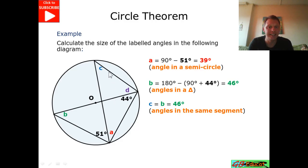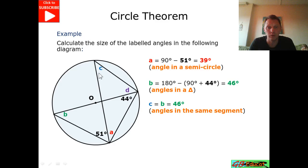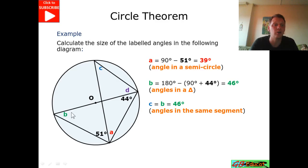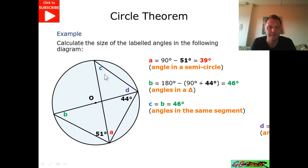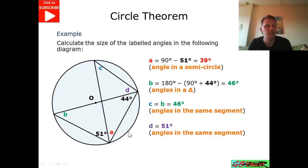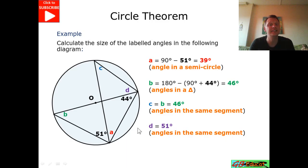For angle C, I've chosen this as 46 degrees also, because here I've got my bowtie shape — angle B is the same as angle C, so this is 46 degrees. Using the exact same reasoning for D, this angle here has got to be the same as this angle here, so D is also 51 degrees.